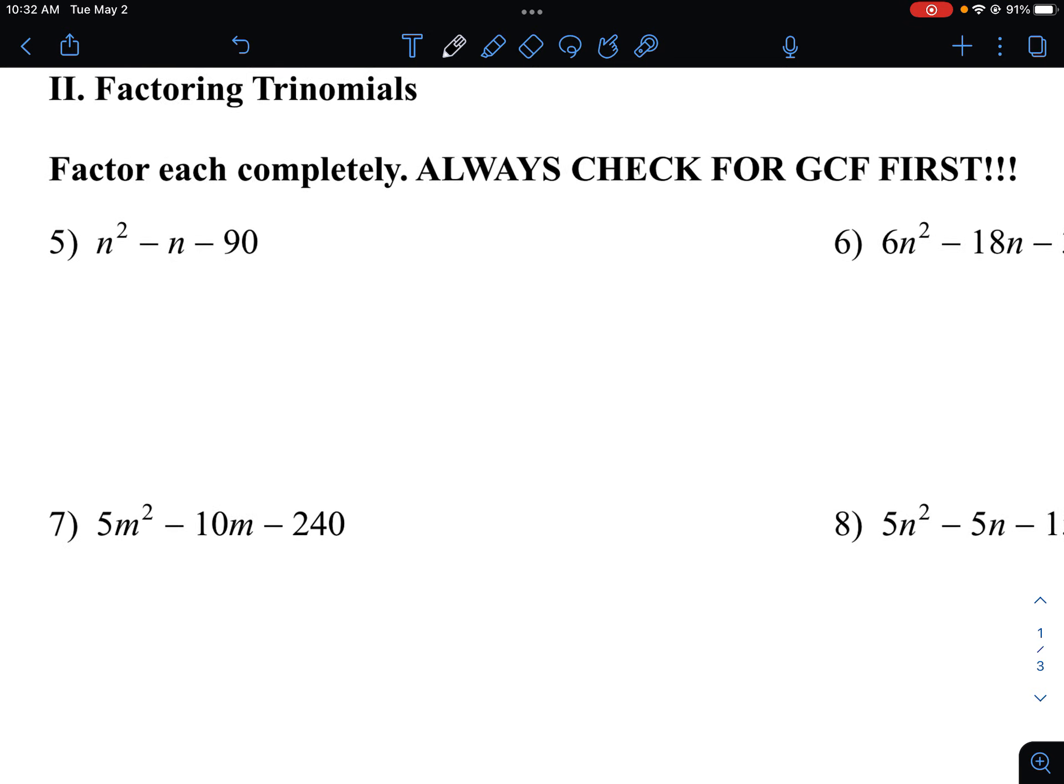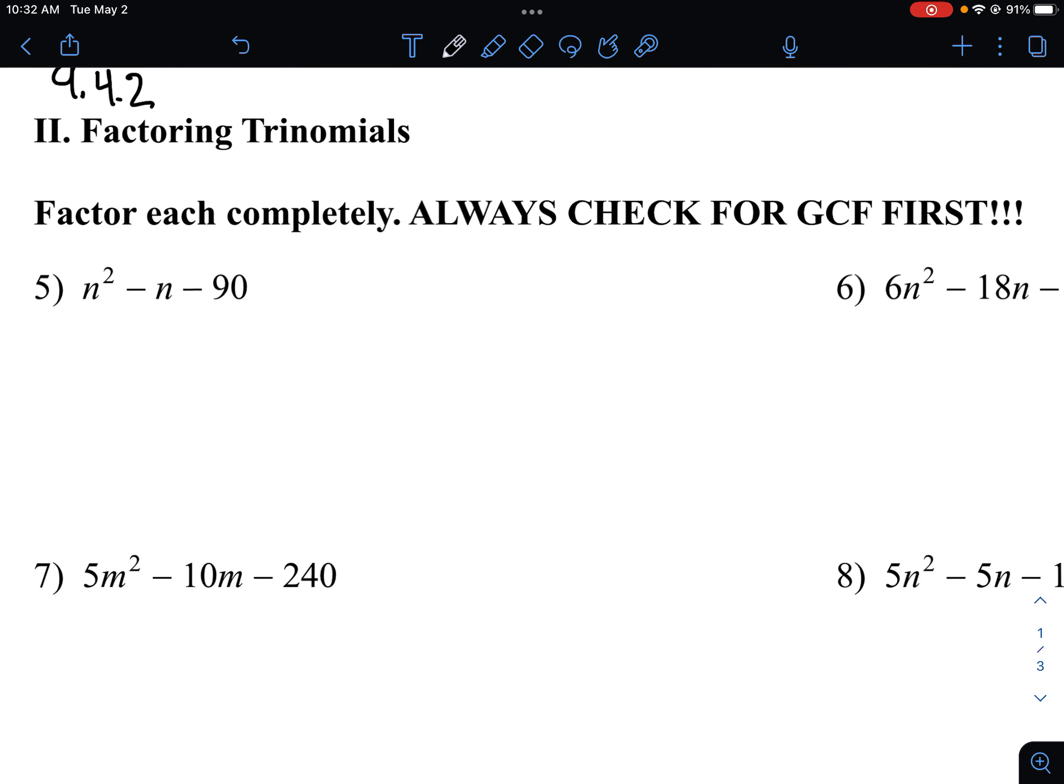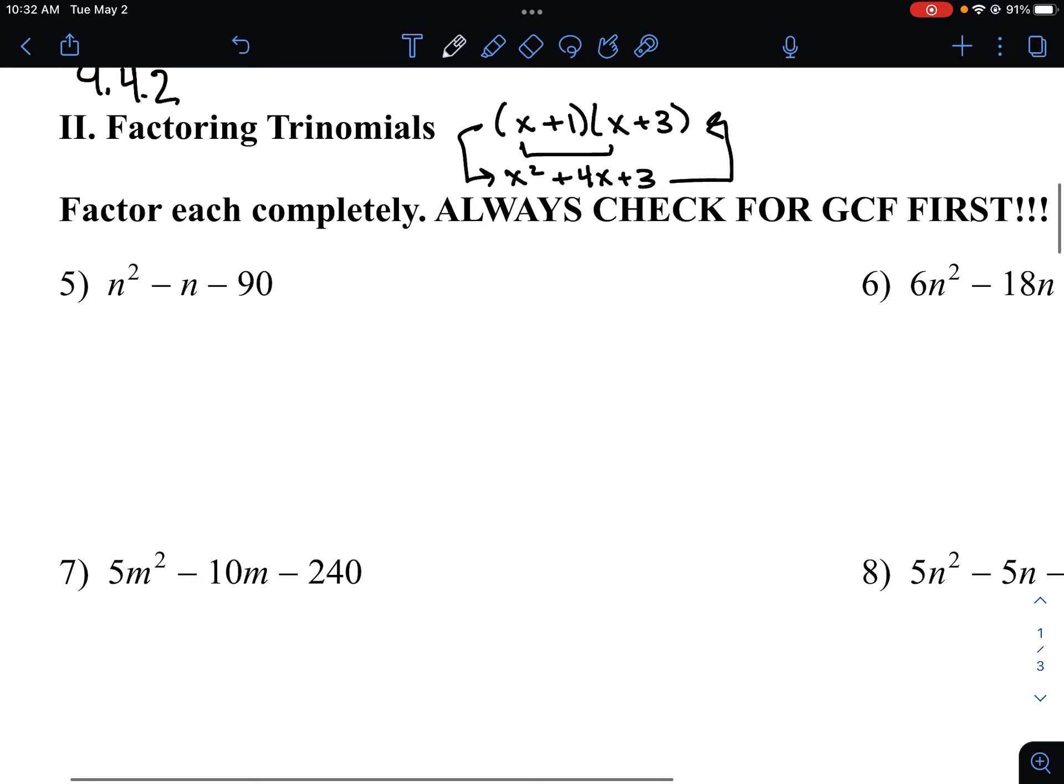So here we have factoring for trinomials, and this is the opposite. Remember that when we had two binomials, and say we had x plus 1 and x plus 3, we would FOIL. x squared, and eventually get to 4x plus 3. We are going to be going backwards from the trinomial to the FOIL state. A little more challenging than FOIL.